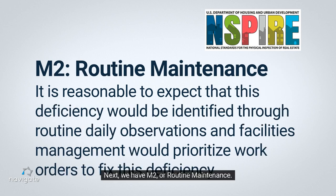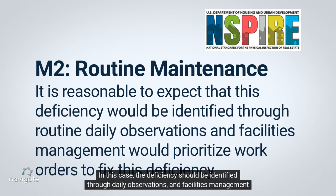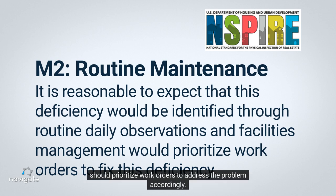Next, we have M2, or Routine Maintenance. In this case, the deficiency should be identified through daily observations and facilities management should prioritize work orders to address the problem accordingly.